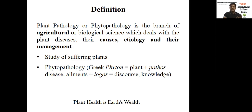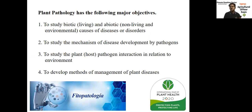Coming to the objectives of plant pathology — what are the things we are going to study? There are four important objectives. The first one is studying biotic (living) and abiotic (non-living) processes of diseases and disorders. Disorders are also considered in plant pathology in certain stages. The second important point is to study the mechanism of disease development by the pathogen.